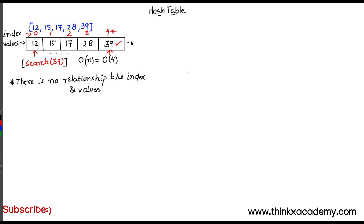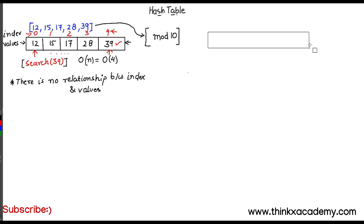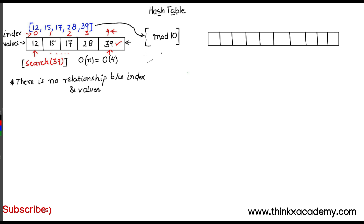In the array data structure, the index positions are in no way related to the values — they are all distinct. Now what I will do is calculate modulus 10 of the given integers, and I will first create an array of 10 numbers, divided into 10 parts: 0, 1, 2, 3, 4, 5, 6, 7, 8, and 9.